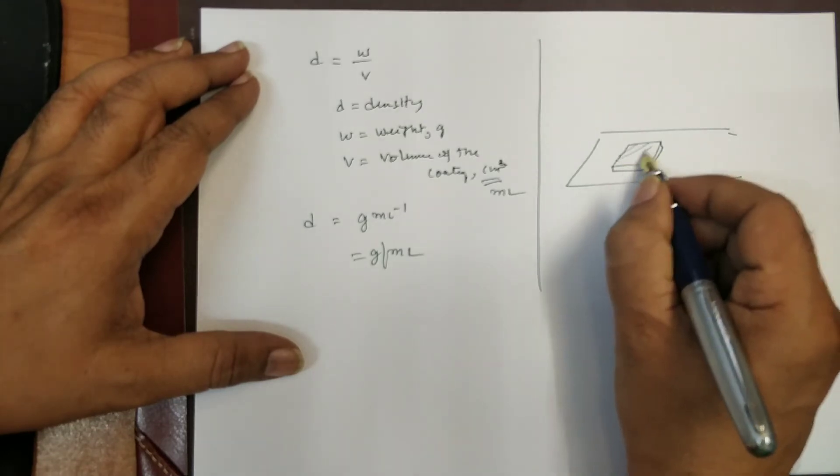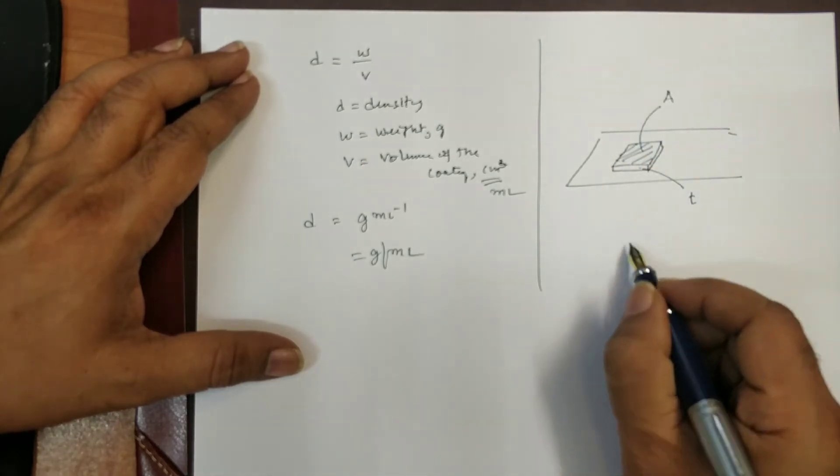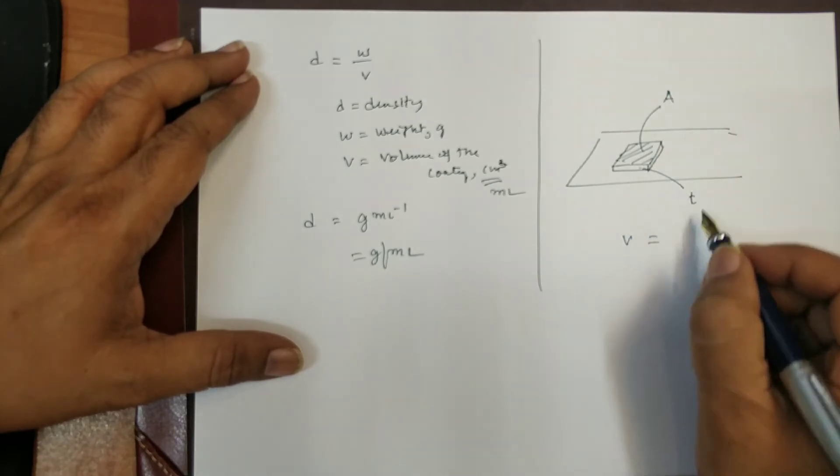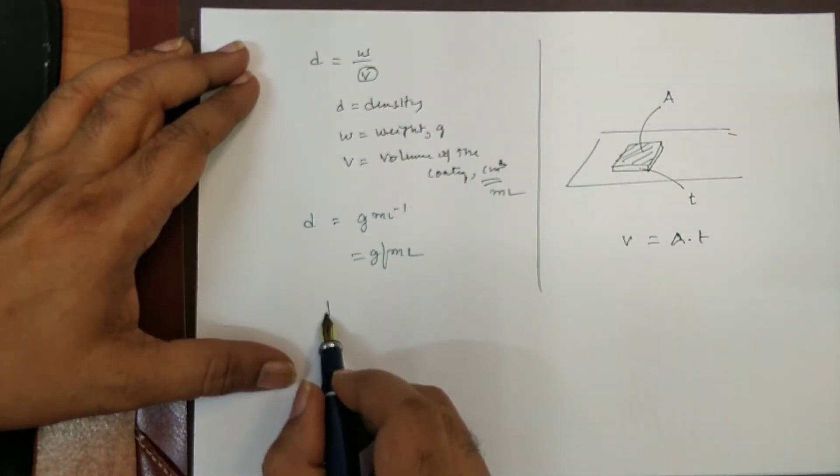And this is the area of coating, surface area. How much surface area? That is A. So, volume is nothing but this area into the thickness. So, that is why I can put A into T. So, I can replace this V by A into T.